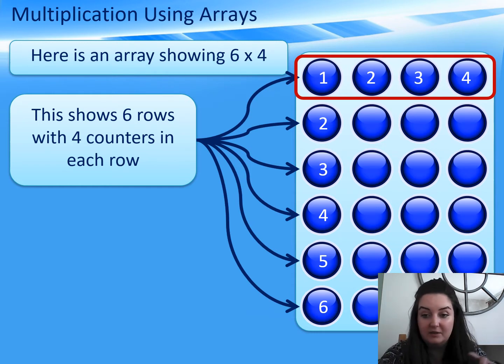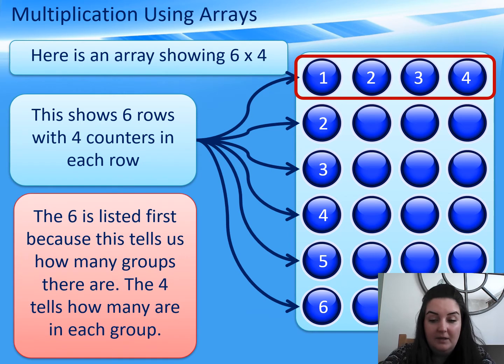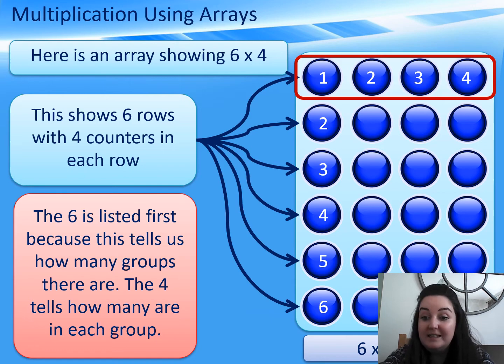That's where we were writing the sentences last week of there are 6 equal groups with 4 in each row. We can write this as 6 times 5, but if we're thinking about the times symbol as the word lots of, so there are 6 lots of 4. The 6 is listed first because it tells us how many groups there are, and then the 4 tells us how many is in each group. So, 6 times 4 is 24.